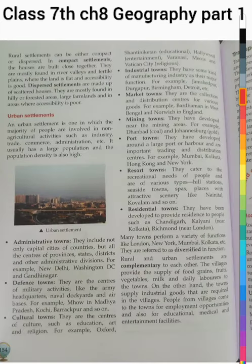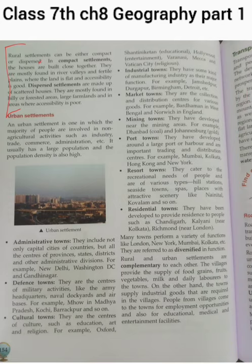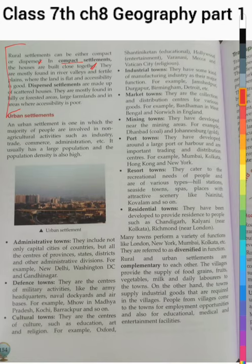Rural settlements can be either compact or dispersed. In compact settlements, the houses are built close together. They are mostly found in river valleys and fertile plains where the land is fertile and accessibility is good. Dispersed settlements have scattered houses. They are mostly found in hilly or forest areas, large farmlands, and hilly areas where accessibility is poor.